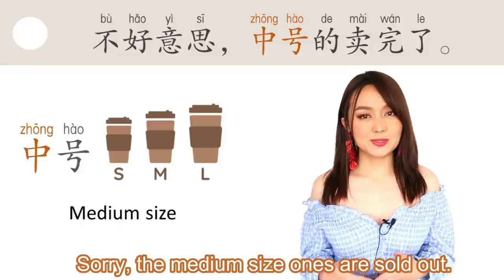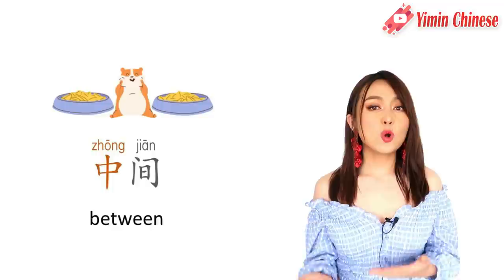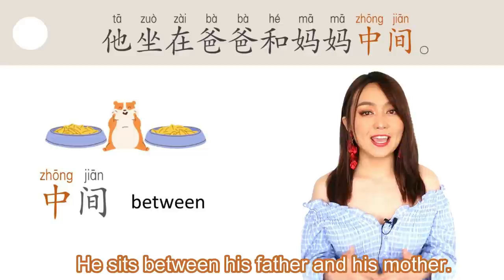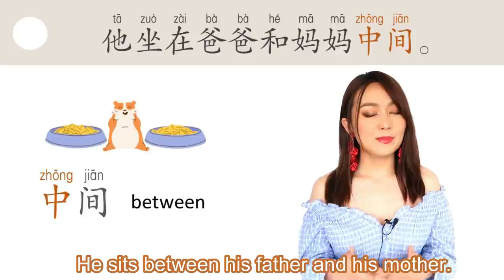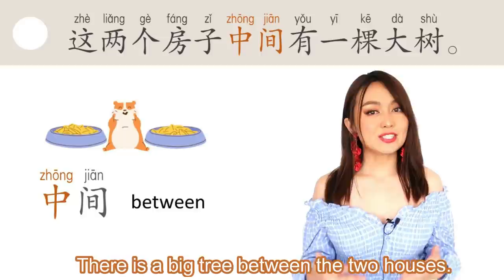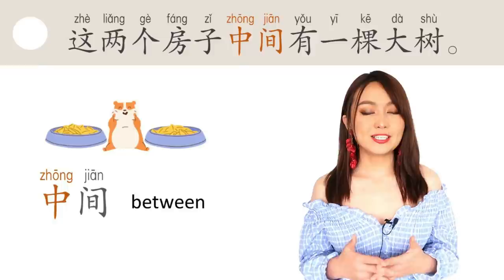不好意思，中号的卖完了。 Next one: 中间, means between. 比如说，他坐在爸爸和妈妈中间。 He sits between his father and his mother. Another sentence: 这两个房子中间有一棵大树。 There is a big tree between these two houses.